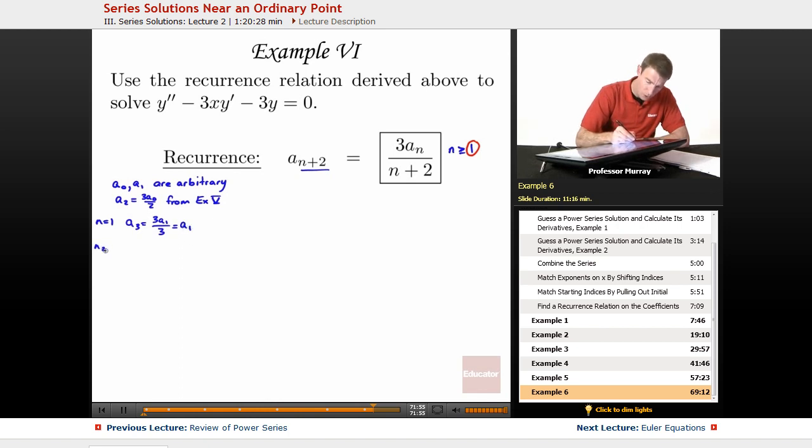n equals 2 gives me A4 equals 3A2 over 4. But A2 was 3A0 over 2, so that's 3 times 3, I'll write that as 3 squared times A0 over 2 times 4.